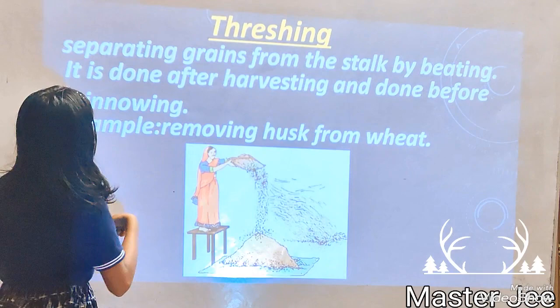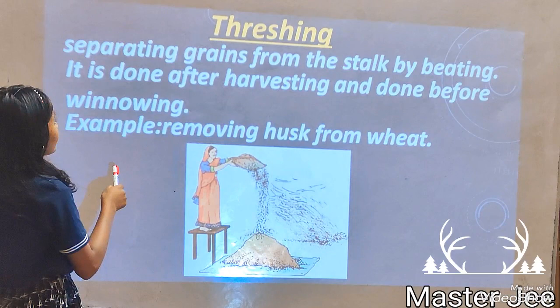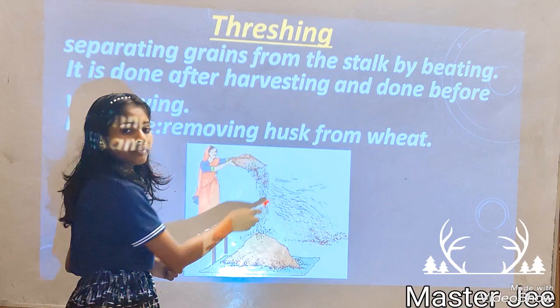Threshing. Separating grains from the straw by beating it is done after harvesting and before winnowing. For example, removing husk from wheat.